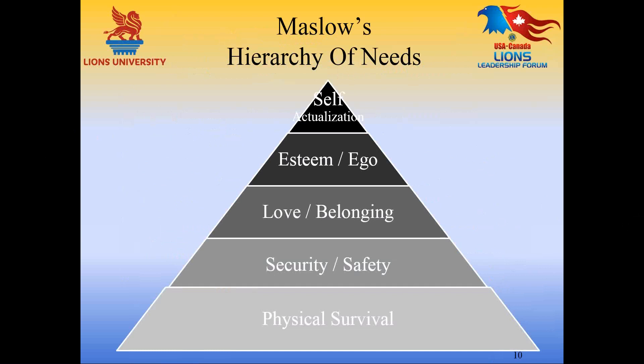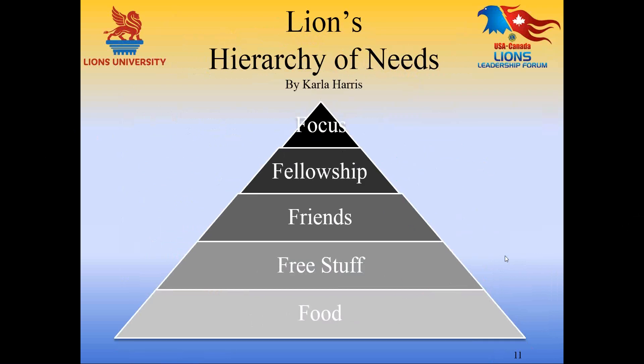Let's go on to the next slide and have some fun with Lions. Here's our own Lions Hierarchy of Needs — we've had the serious stuff, but this really is what Lions are about. We like our food; we start with that. Then we move up to the free stuff — cool vests, logo shirts, great pins. And on up to our friends in Lions, which are so important. We enjoy being together, sharing fun and fellowship. The focus — the knowledge that what we do matters — correlates with the self-actualization Maslow talks about. Our family of Lions becomes our family of choice, and the positive encouragement we receive from them matters a great deal.